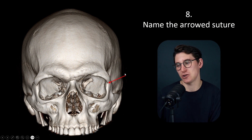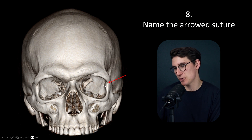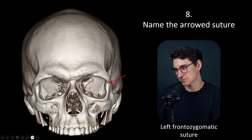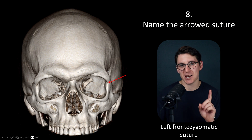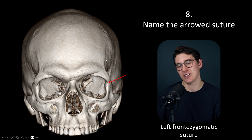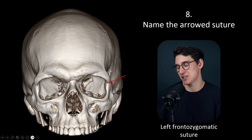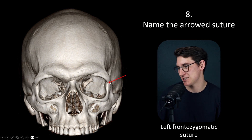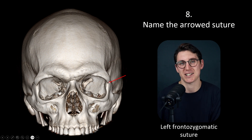Question 8 asks us to name the arrowed suture — between the frontal bone and the zygoma. This is the left frontozygomatic suture. The way sutures are named is fairly consistent throughout this course. Behind it, there's a suture between the greater wing of the sphenoid and the frontal bone — that's the sphenofrontal suture, not the frontosphenoidal suture. The simple answer here: the left frontozygomatic suture.